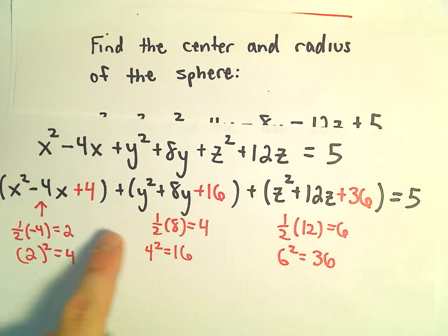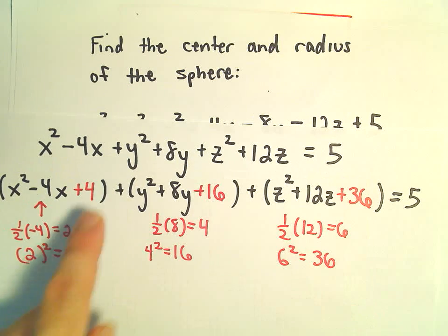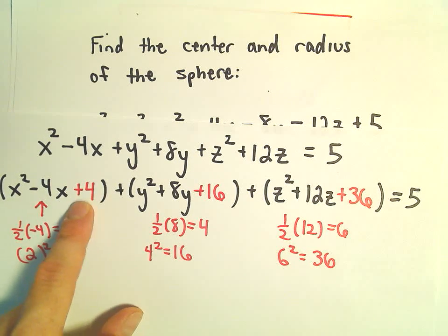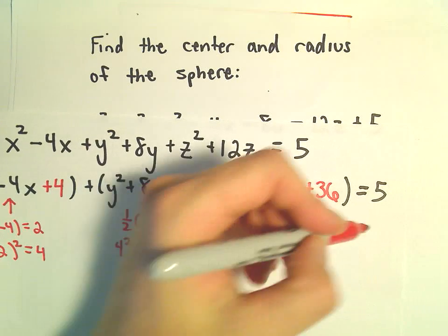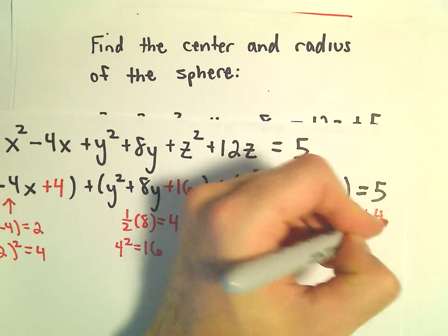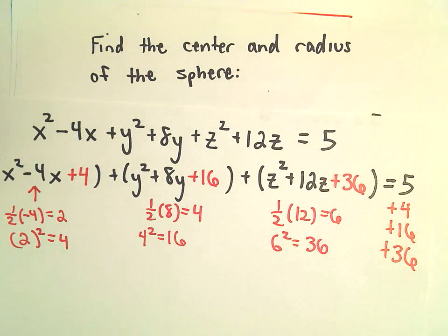So now we have to be careful. If you undid the parentheses, everything would be there, but we would have extra things. Namely, we would have an extra plus 4, plus 16, and plus 36. So on the right side, I would have to add 4, and 16, and 36. I'm going to make sure that I do that as well.